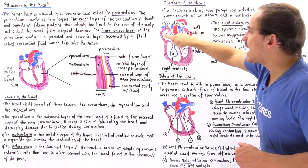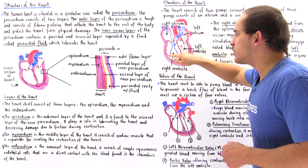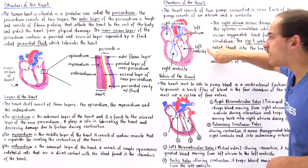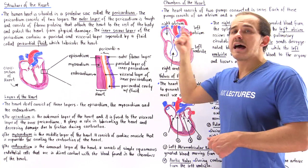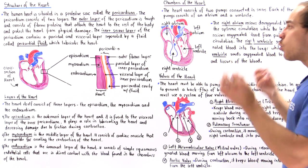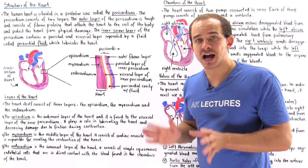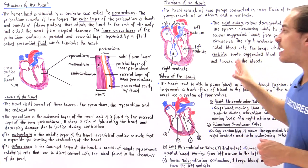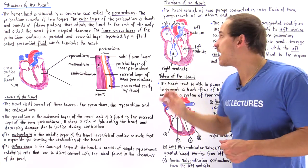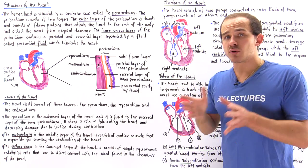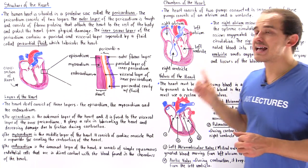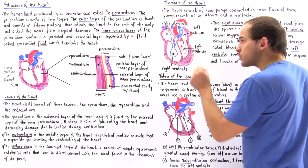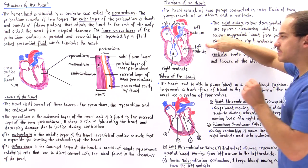The right atrium and right ventricle make up the right pump of the heart, and the left atrium and left ventricle make up the left pump. These pumps work at the same exact time — when the right pump contracts, the left pump contracts simultaneously, and when the right pump relaxes, the left pump relaxes at the same exact time.